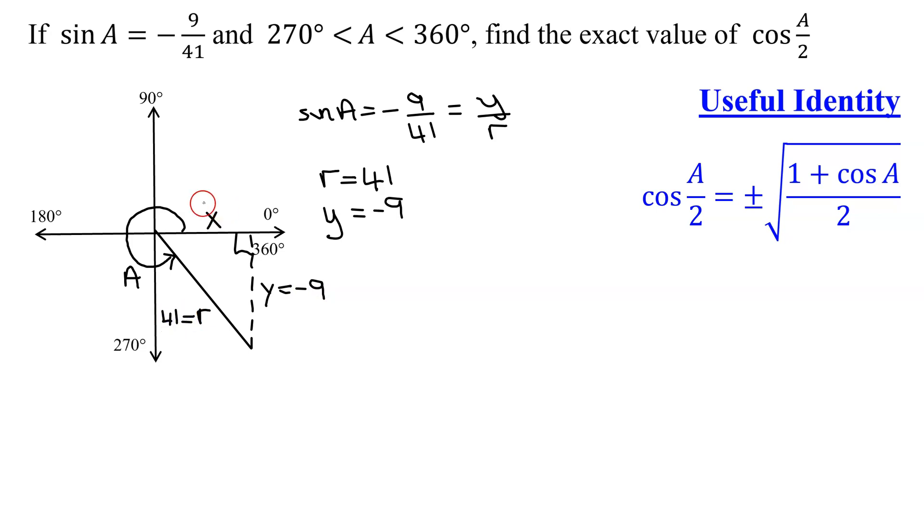R was equal to 41. And so now I need to find X. We're going to use the Pythagorean theorem. X squared plus Y squared equals R squared. We don't know X, so X squared plus Y is negative 9 all squared equals R squared, which is 41 squared. So X squared plus negative 9 all squared is positive 81 equals 41 squared is 1,681.